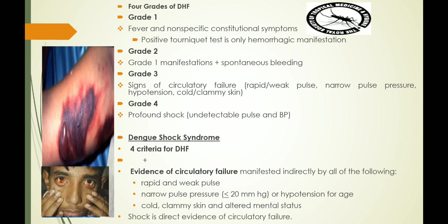In grade 3, along with spontaneous bleeding, the patient will have signs of circulatory failure with rapid or weak pulse, narrow pulse pressure, hypotension and cold clammy skin. In grade 4, there will be profound shock with an undetectable pulse and blood pressure. In dengue shock syndrome, all four criteria of dengue hemorrhagic fever are present with evidence of circulatory failure, evidenced by rapid and weak pulse, narrow pulse pressure, cold clammy skin and altered mental status along with shock.